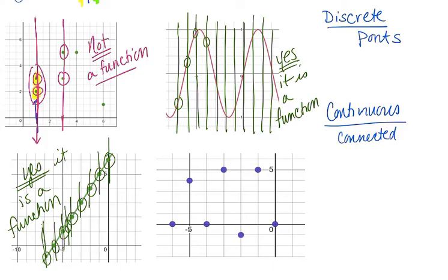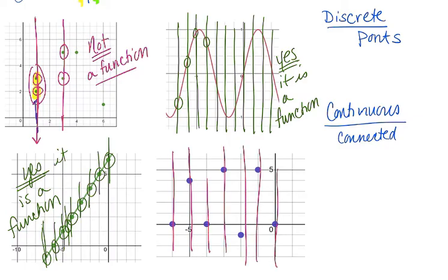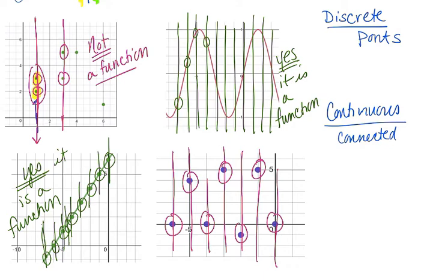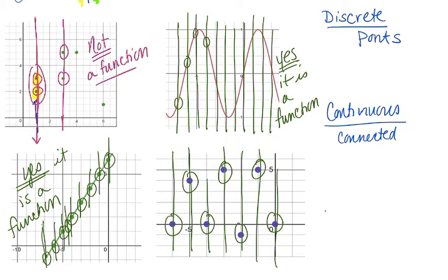The last graph with purple dots is a discrete set of data points — they're not connected. Taking a vertical line across, I get one hit at each point. I only ever get one output for each input, so this graph passes the vertical line test and is a function. A circle, by contrast, would not be a function — a vertical line would give two hits at some points.